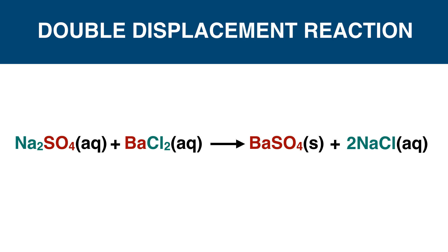SO4²⁻ ion in Na2SO4 combines with Ba²⁺ ion in BaCl2 and forms BaSO4 compound. Cl⁻ ion in BaCl2 combines with Na⁺ ion in Na2SO4 and forms 2NaCl. By exchanging ions, new compounds are formed.